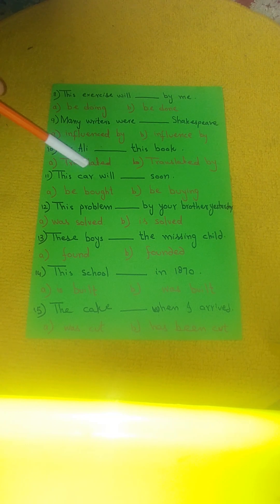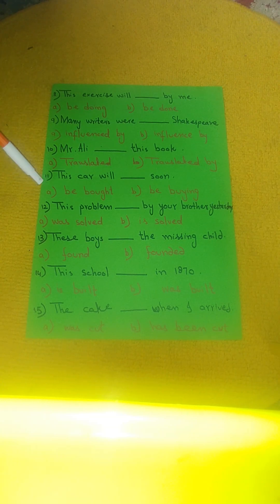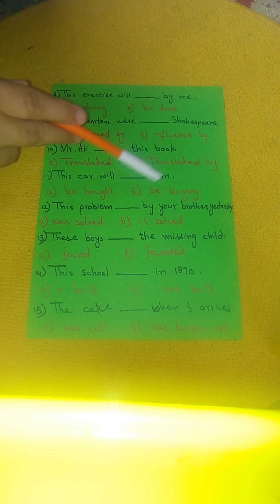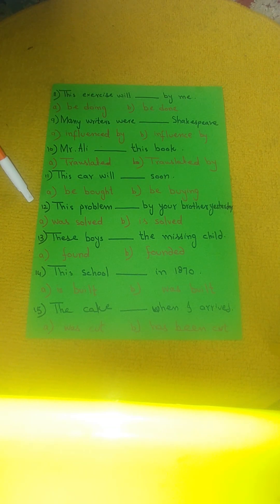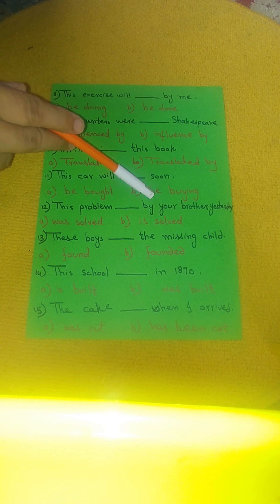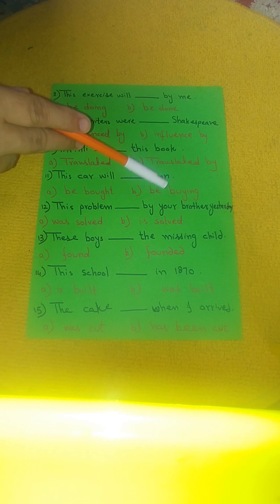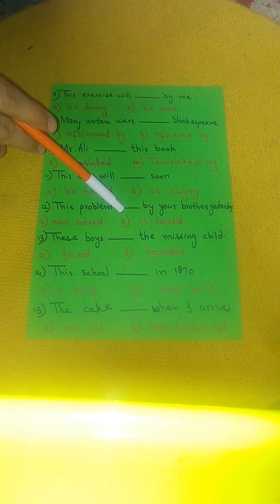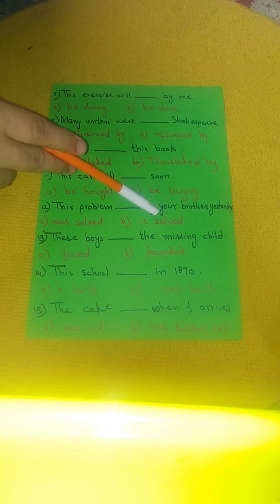Number 11: This car will ___ soon. Option A: be bought. Option B: be buying. Number 12: This problem ___ by your brother yesterday. Option A: was solved. Option B: is solved.